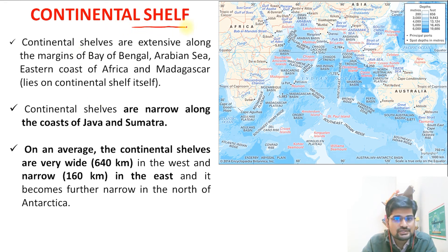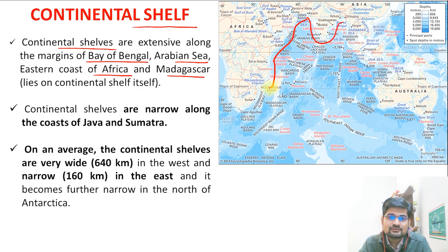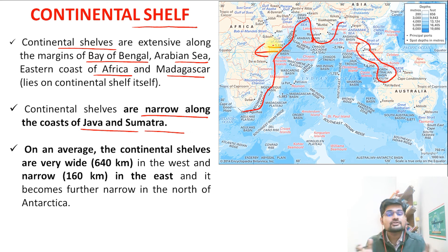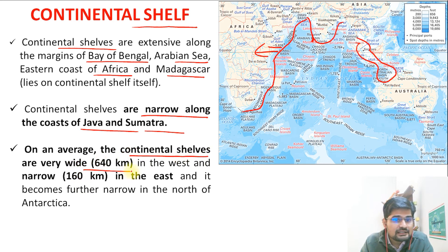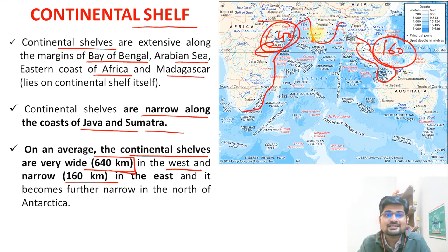The continental shelf is extensive along the Bay of Bengal, Arabian Sea, east coast of Africa, and Madagascar. Continental shelves are narrow along Java and Sumatra. The western and northern parts have greater shelf areas, while the eastern parts have lesser shelf areas. On average, the continental shelves are about 640 kilometers wide in the west, while only 160 kilometers in the east — almost three times less.